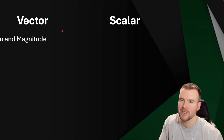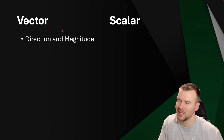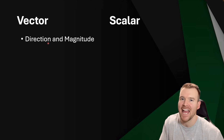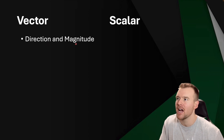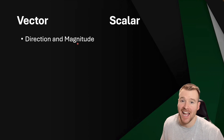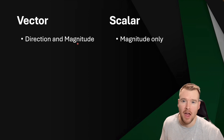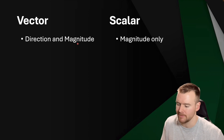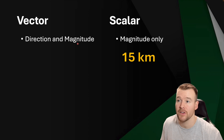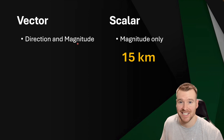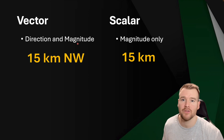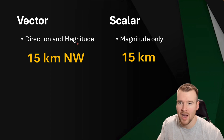We'll start with our definitions, really similar to the video. A vector is described as having both direction and magnitude. Magnitude probably sounds more complicated than it actually is — it just means the amount, the number. A scalar is just focused on that part, just the number, not direction. So maybe if you drove your car 15 kilometers, that would be a scalar value. But if we said 15 kilometers northwest, that's sounding more like a vector.